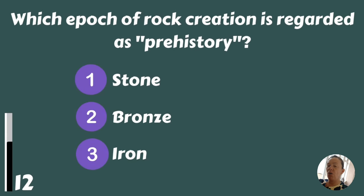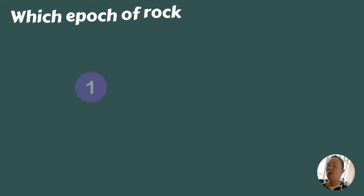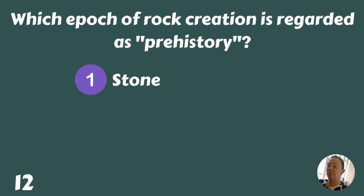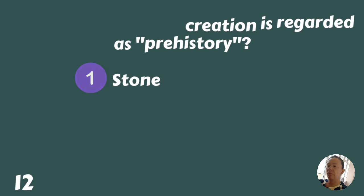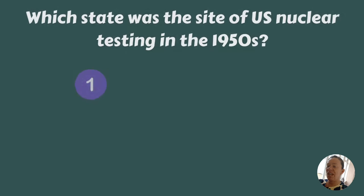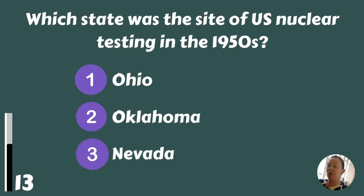In which nation was Empress Wu the only female ruler — Korea, Japan, or China? China. Which epoch of rock creation is regarded as prehistory — Stone, Bronze, or Iron? Stone. Which state was the site of US nuclear testing in the 1950s — Ohio, Oklahoma, or Nevada? Nevada.